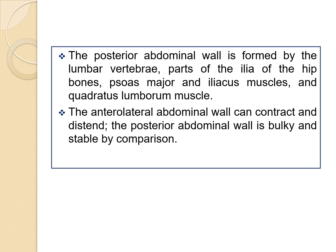Now coming to the posterior abdominal wall. The posterior abdominal wall is formed by the lumbar vertebrae, parts of the ilia of the hip bones, psoas major and iliacus muscles, and quadratus lumborum muscle. The anterior lateral abdominal wall can contract and distend, whereas the posterior abdominal wall is bulky and stable by comparison.